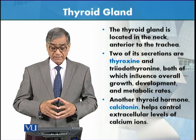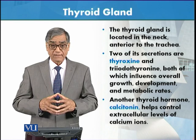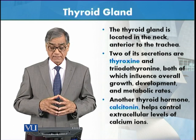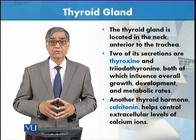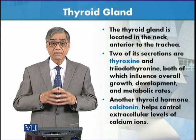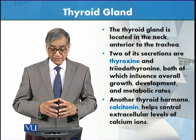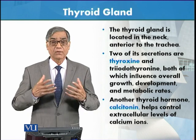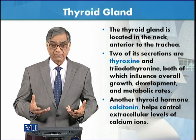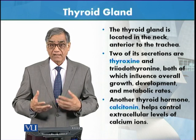This gland produces two very important hormones. One we call thyroxine, also called T4, and then there is triiodothyronine, which is T3. Now both of these influence overall growth, metabolism, and development.